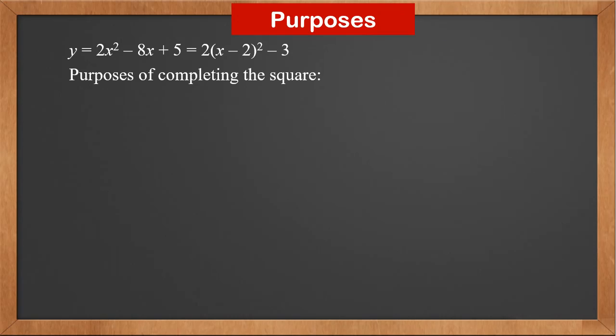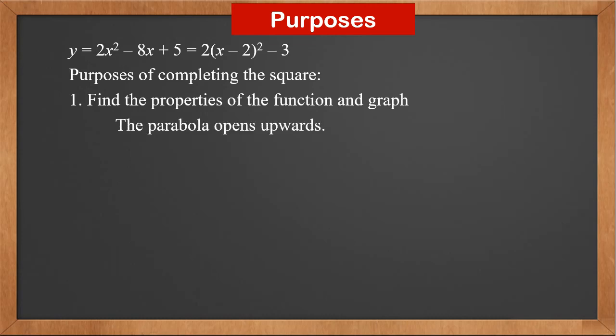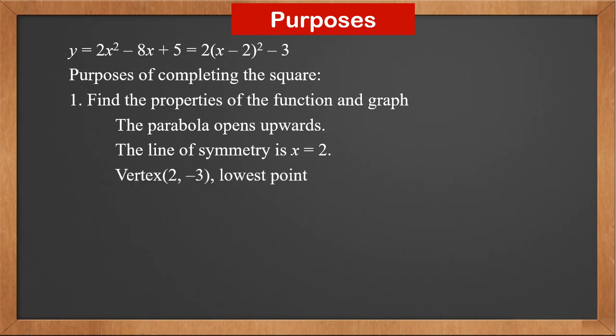Now what's the purpose of doing this? By completing the square, we can write y = 2x² - 8x + 5 as 2(x - 2)² - 3. From this, we can know the properties of the function and its graph. Since 2 is positive, the parabola opens upwards. The line of symmetry is x = 2, the vertex is (2, -3) and it's the lowest point. When x = 2, there is a minimum function value of -3.